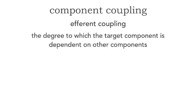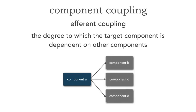The next is called efferent coupling. Efferent coupling is the degree to which the target component — that would be you — is dependent on other components. This is also called fan-out. So there's component A. Efferent coupling says: who are you dependent on? It's easy for me to remember afferent and efferent. The way I remember it is A comes before E. So afferent is who comes before me, in other words who's dependent on me. And efferent is who comes after me. A comes before E. Or you might want to think about it as fan-in or fan-out.